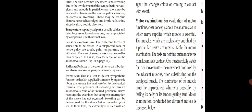Motor examination: for evaluation of motor function, clear knowledge of which nerve supplies which muscle is essential. Muscles exclusively supplied by a particular nerve are most suitable for motor examination. The tests are maneuvers to make a muscle contract. One must carefully watch for trick movements — movements produced by adjacent muscles often substituting for the paralyzed muscle. Muscle contraction must be appreciated by feeling the muscle belly or its tendon getting taut.